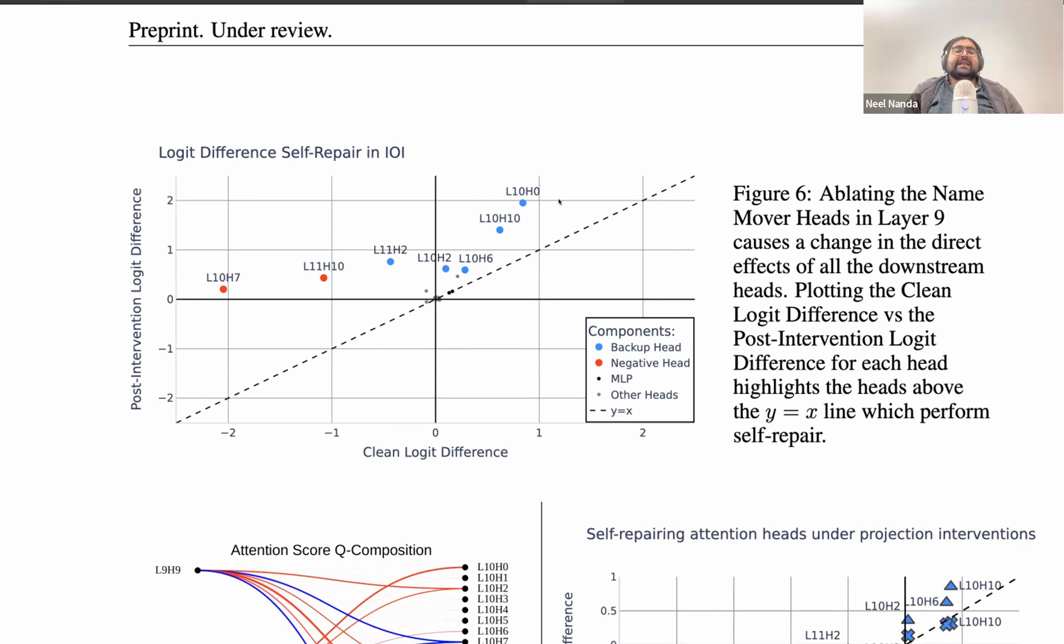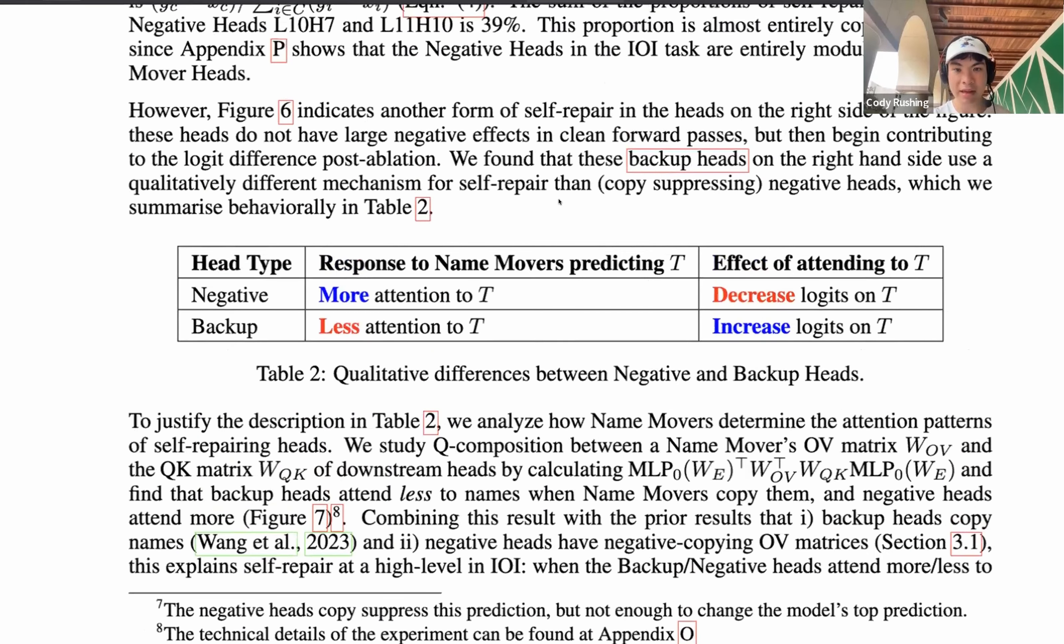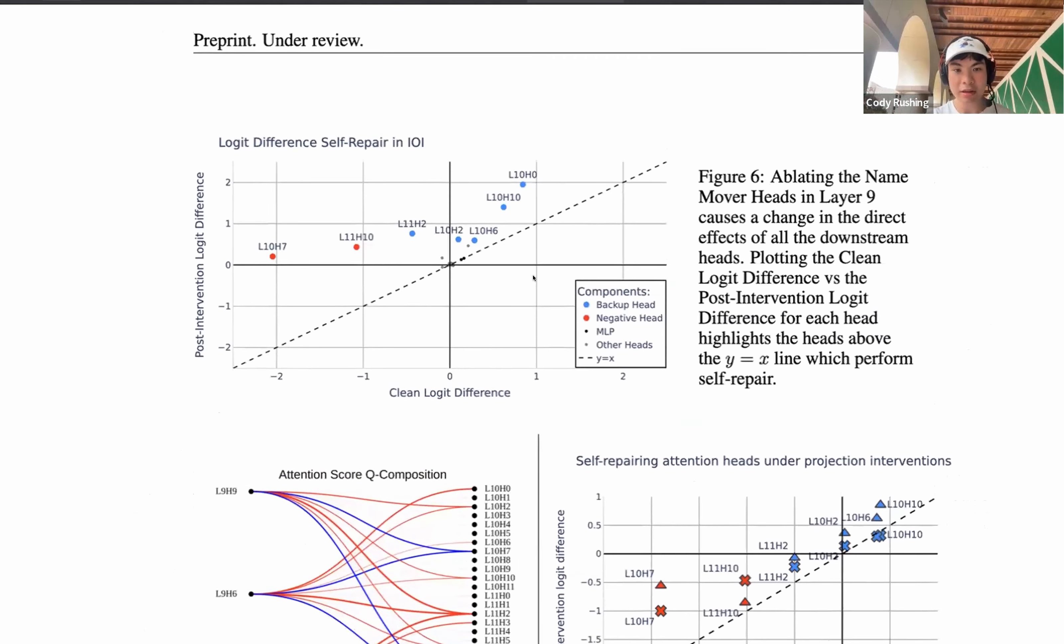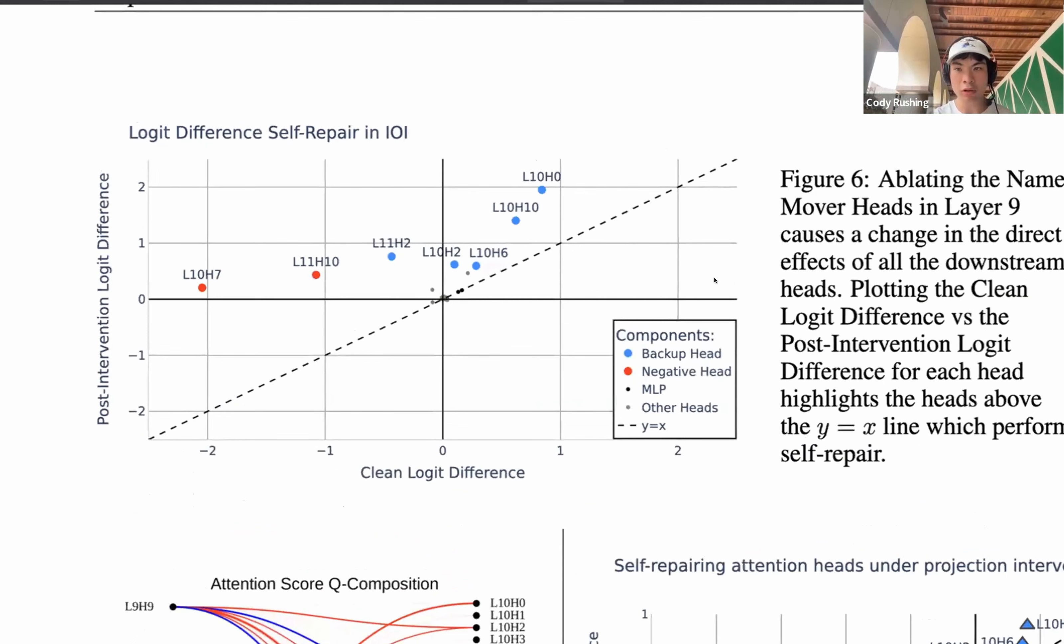We see there's a bunch of small black dots on there, but if something does more after the deletion, it's above the line. If it does less after deletion, it's below the line. And we've highlighted a bunch of prominent heads that are above the line. We see that a bunch of these started kind of positive and became way more positive, and some of these started very negative and became kind of positive. Can you explain why L11H2 is blue rather than a negative head? Yeah, so we'll go into this a bit more later, but originally we had discovered these two types of self-repair heads, backup heads and negative heads, which were kind of like qualitatively different ways of implementing self-repair.